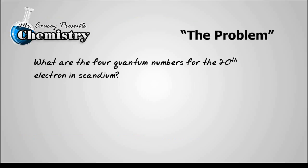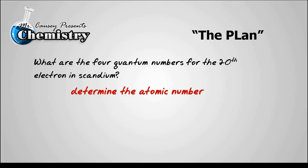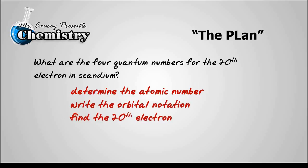Here's the problem. What are the four quantum numbers for the 20th electron in scandium? Alright, well, let's develop a plan. First, let's determine the atomic number. Let's write the orbital notation out. Then find the 20th electron. And then write the four quantum numbers for that electron.